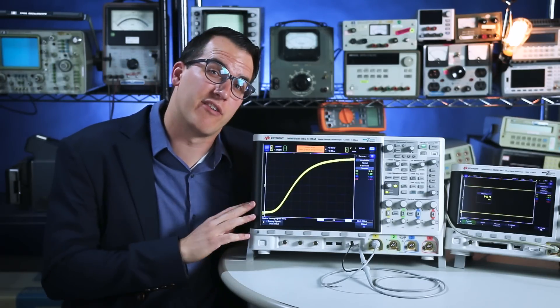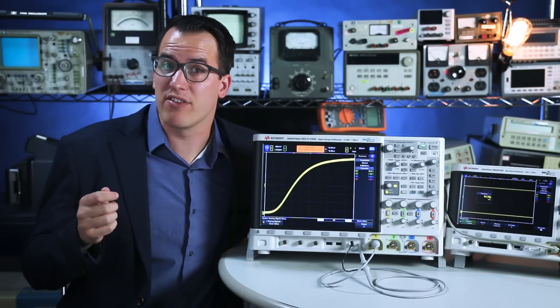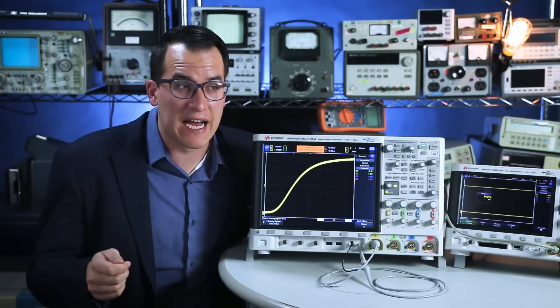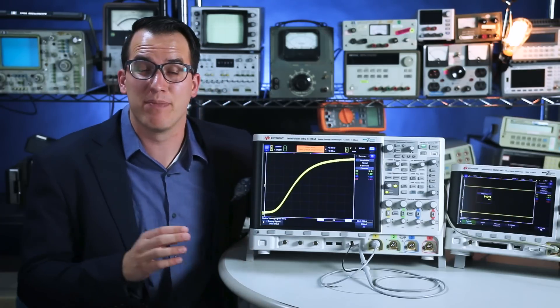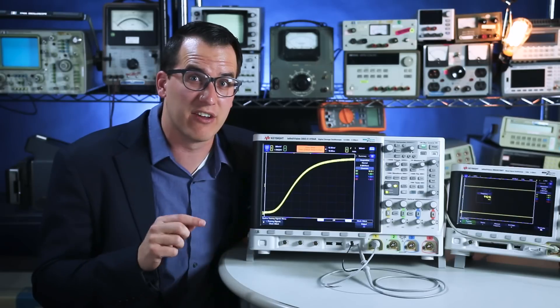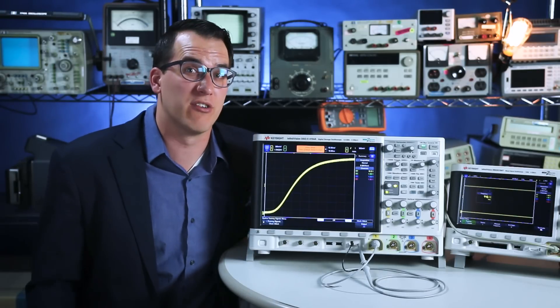The waveform update rate spec on your oscilloscope is much like having tickets to the lottery. The more tickets you have or the faster your waveform update rate, the more likely you are to win the lottery. In electrical engineering, winning the lottery is being able to see and identify glitches in your signal because that's what helps you get your job done faster.